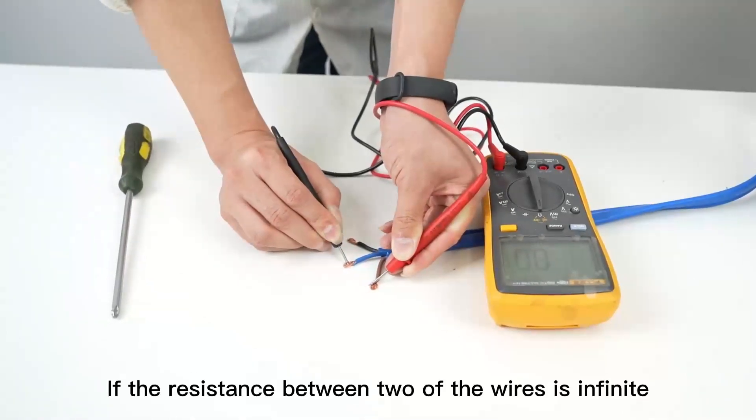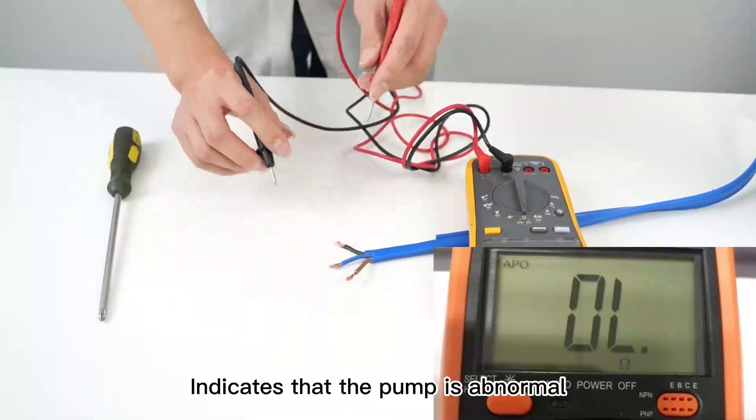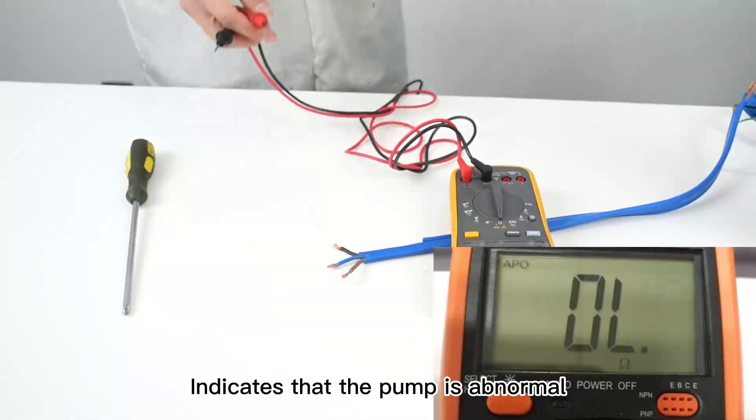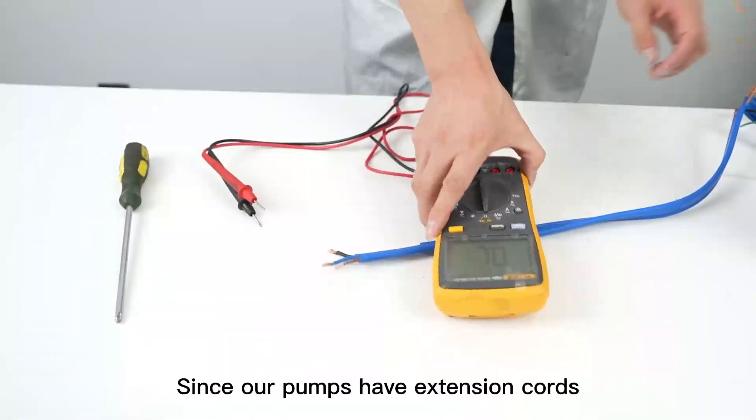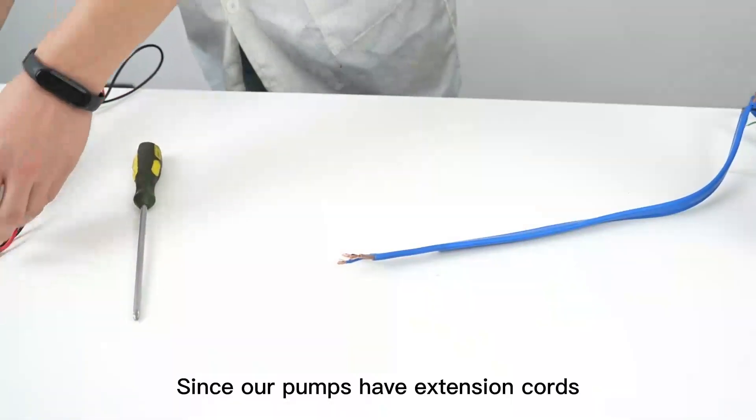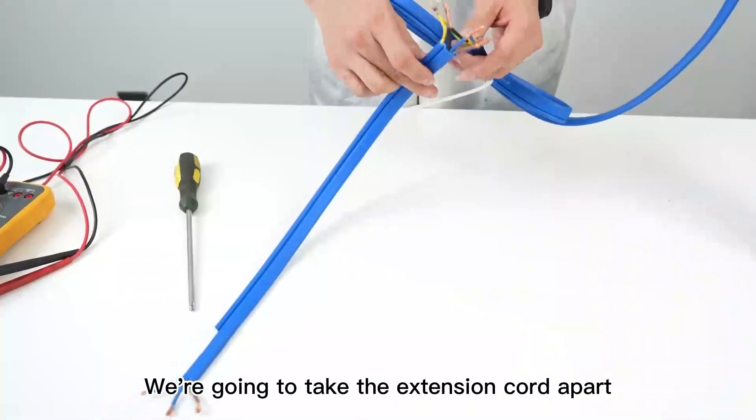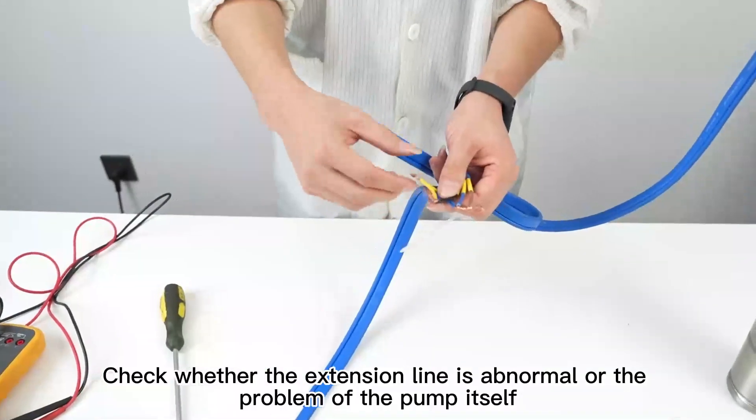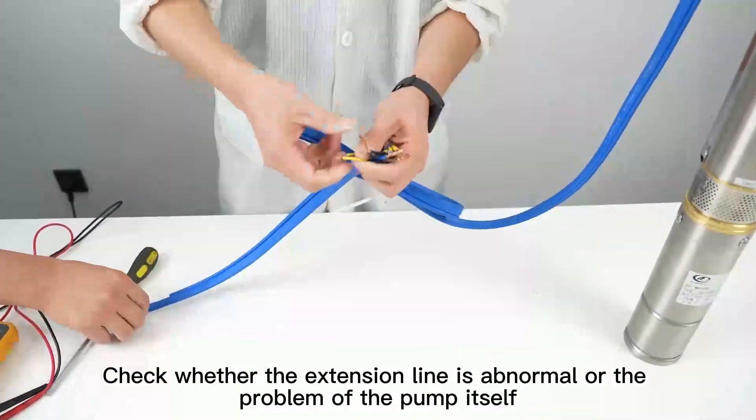If the resistance between two of the wires is infinite, this indicates that the pump is abnormal. Since our pumps have extension cords, we're going to take the extension cord apart to check whether the extension line is abnormal or the problem is with the pump itself.